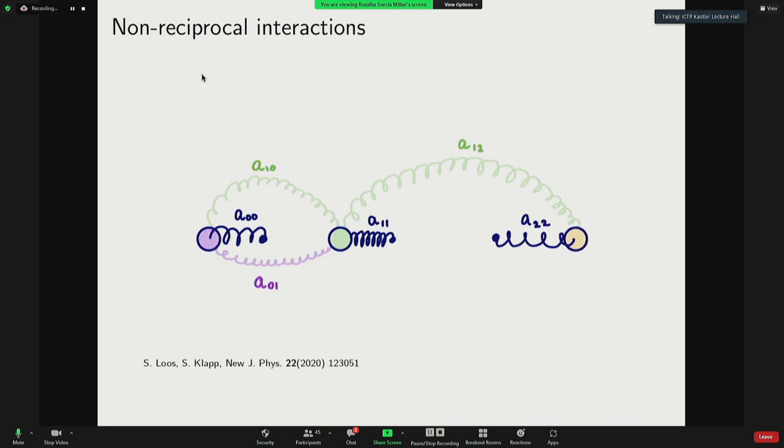Another example is this one represented by three particles. Each of these three particles are subject to a harmonic potential. And on top of that, they may interact with one another. In this drawing, for example, the green particle is coupled to both purple and orange. But the orange particle is not coupled to any other particle. And in that sense, these type of interactions are non-reciprocal.